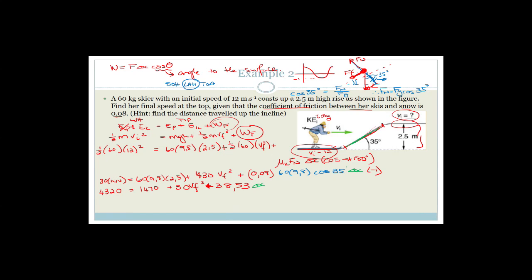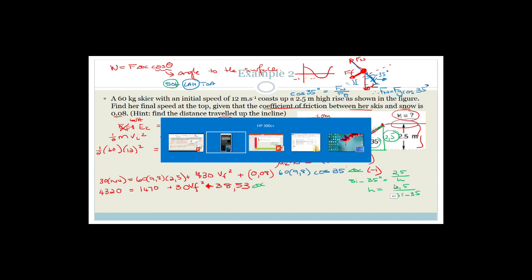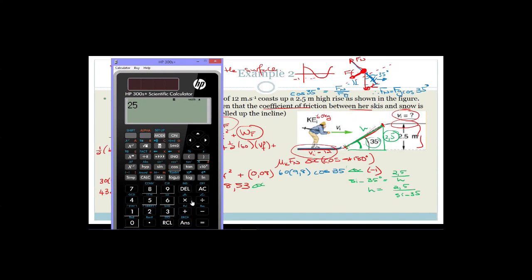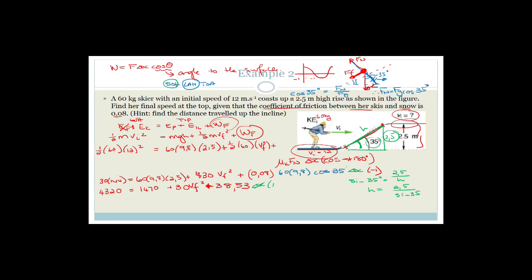Delta x is the distance along the incline. This forms a right-angled triangle where the angle is 35 degrees and the height is 2.5 meters. Using SOHCAHTOA, the height is the opposite side to the angle and delta x is the hypotenuse. So sine 35 degrees equals 2.5 over delta x, giving delta x equals 2.5 over sine 35, which equals 4.36 meters.